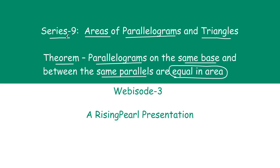So friends, this is Series 9, and we hope that from Series 8 you have gone through and we have discussed at length about quadrilaterals and parallelograms in particular — what is meant by a parallelogram, what are the unique properties, and many theorems and proofs. Similarly, we hope you have gone through the prior Series 7 on triangles — congruent triangles and so many different congruence rules.